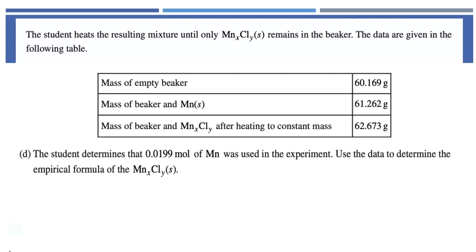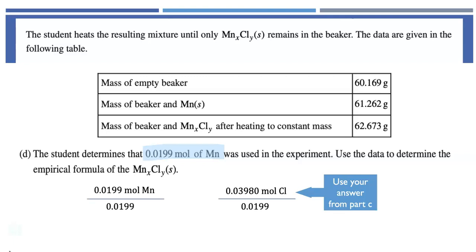Part D says the student determines that 0.0199 moles of manganese was used in the experiment. Use the data to determine the empirical formula of the manganese chlorine containing salt. From part C, we know we had 0.0398 moles of chlorine. So we want to find the lowest whole number ratios of moles of manganese versus moles of chlorine. You divide these two values by the smaller number of moles, which is 0.0199. That gives me a relative number of one moles of manganese to two moles of chlorine. So when I go to write my empirical formula, X would be one and Y would be two. We're going to write MnCl2. This also was worth one point.